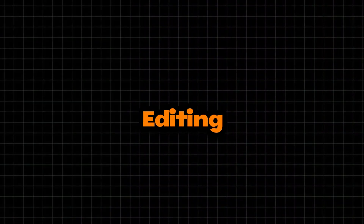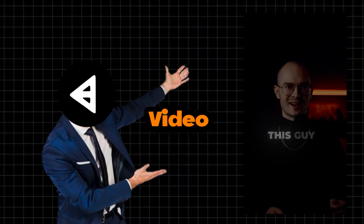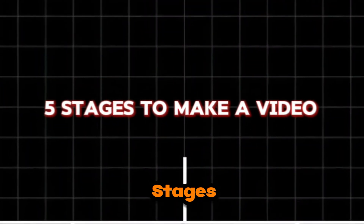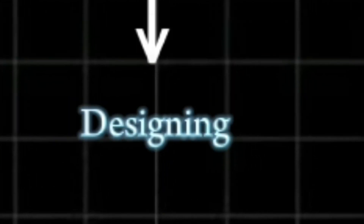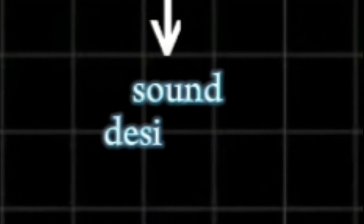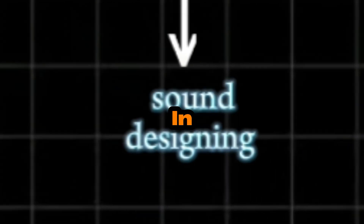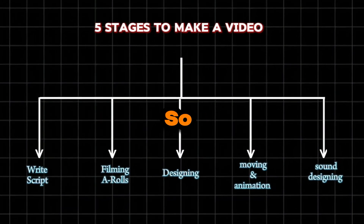Before we start editing, we must know how to create a video like this. This type of video has five stages to be created: writing the script, filming the A-rolls, designing, moving and animation, and sound designing. But in this video, we will re-edit one, so we will remove three stages.